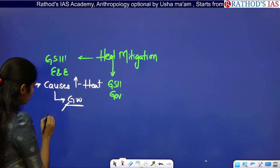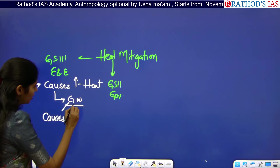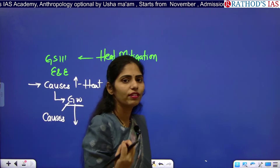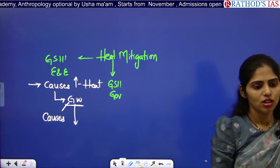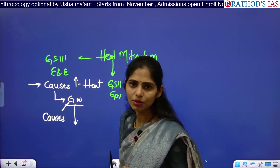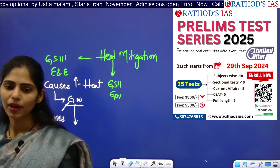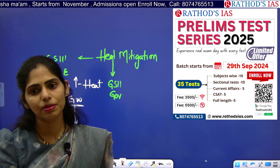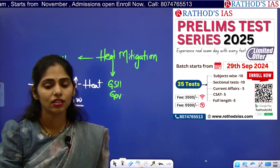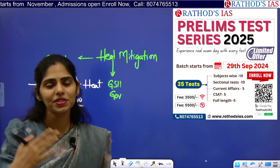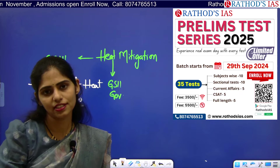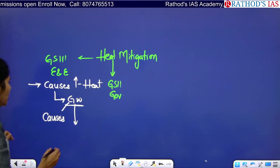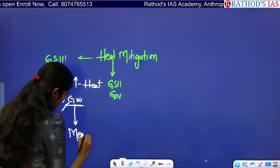You need to know the causes of global warming — why there is increasing atmospheric temperature. The causes include increasing carbon dioxide emissions and pollution, urban heat islands, the industrial revolution, and the greenhouse effect. You should also know what measures we can take to control heat waves.